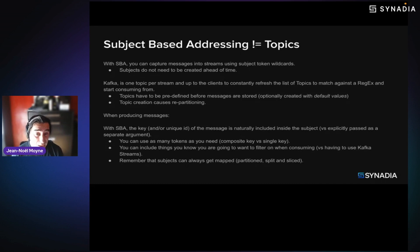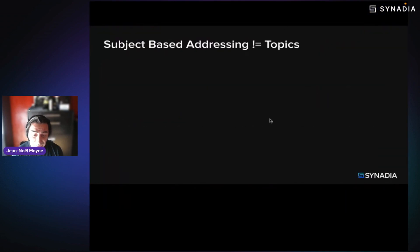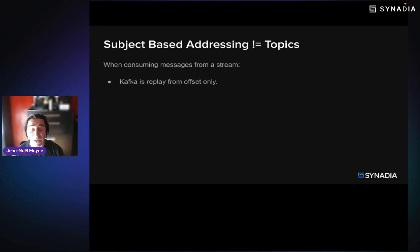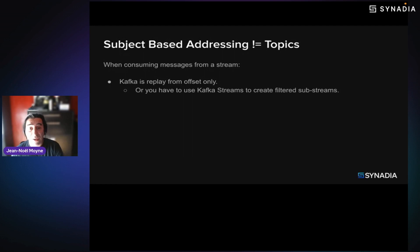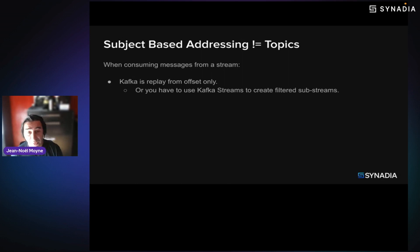When consuming messages from a stream, Kafka is replay from offset only, or you have to use Kafka Streams to create filtered sub-streams. Using Kafka Streams, you deploy an instance of a process that will pull messages from one stream, do the filtering by looking at each message one by one, filter on something — maybe the key or something else — and then create sub-streams, other streams to which it puts these messages. So you end up storing the message more than once.